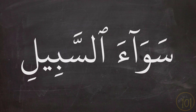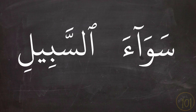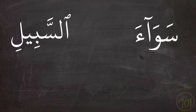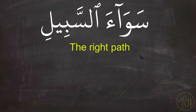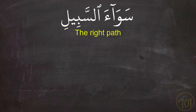Next is another combination that involves the word السبيل: سواء السبيل. This is made up of two words — سواء, which means 'equal,' and السبيل, which means 'the way.' Together, this combination means 'the right path' or 'the right way,' and we see it used in the following examples.